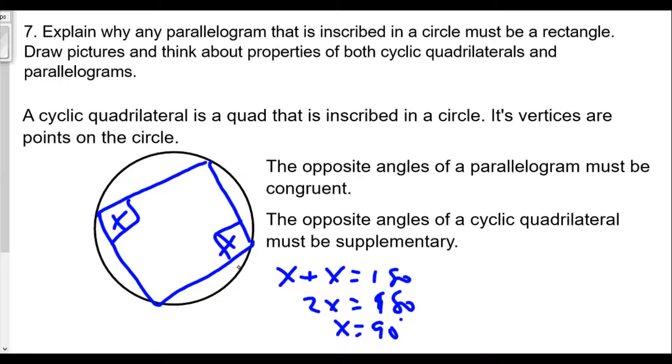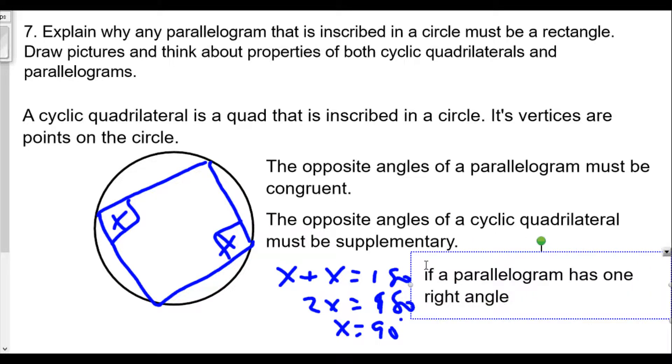That would mean that the angles here are both right angles. Which, by definition, we know if a parallelogram has one right angle, then it is a rectangle.